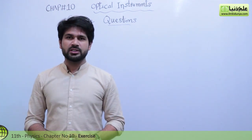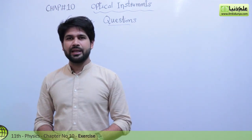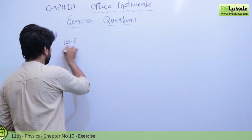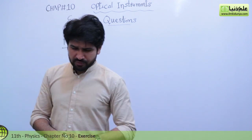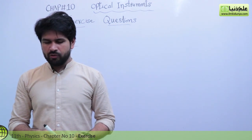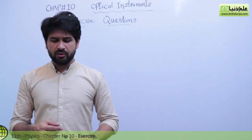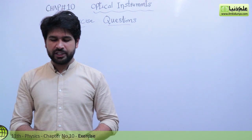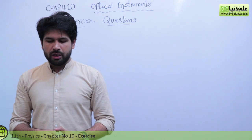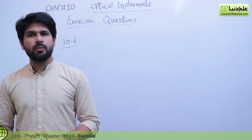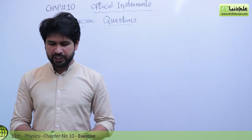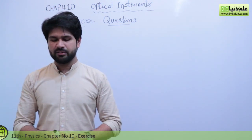Okay, the next question is chapter number 10 exercise question 10.6. The statement of 10.6 is: if a person was looking through a telescope at the full moon, how would the appearance of the moon be changed by covering half of the objective lens? I repeat: if a person was looking through a telescope at the full moon, how would the appearance of the moon be changed by covering half of the objective lens?